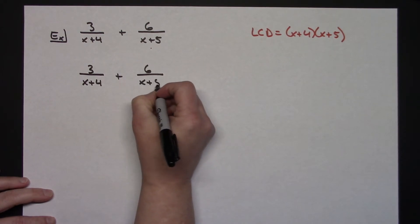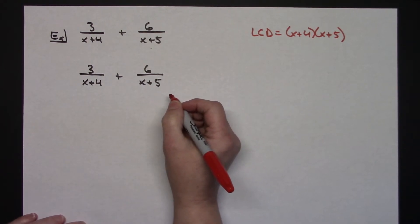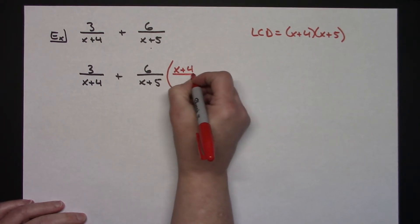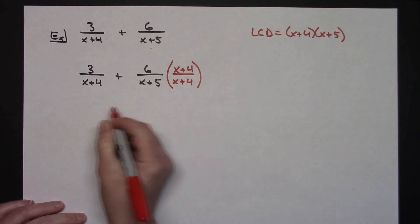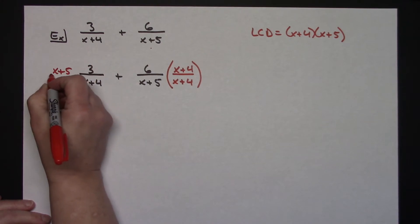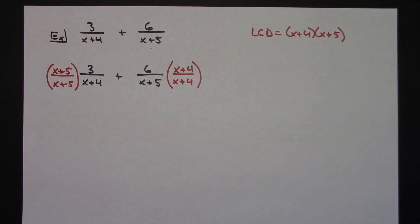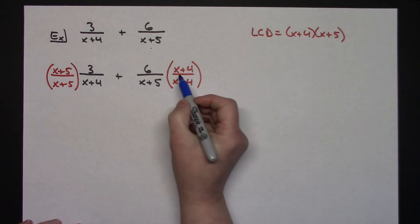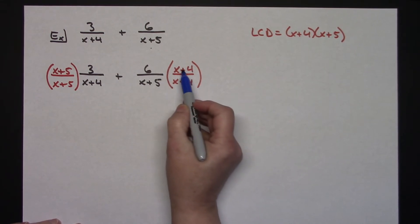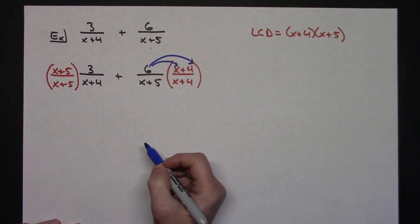I'll rewrite to give plenty of room. I want to use a form of one so that I don't alter the equation. This first fraction needs to be multiplied by x plus 4 over x plus 4. This second fraction needs to be multiplied by x plus 5 over x plus 5. I'm putting parentheses around there because that is a binomial, and that binomial is being multiplied by 6, so the 6 needs to be distributed to both of those terms.